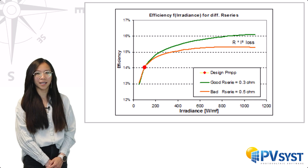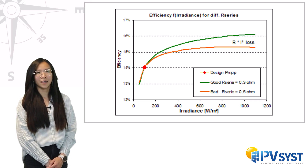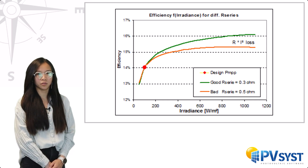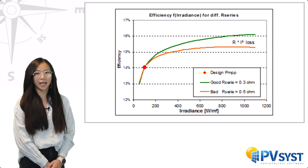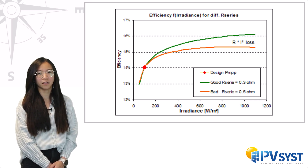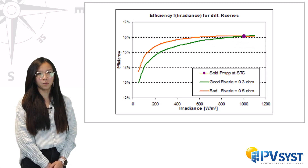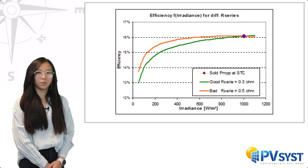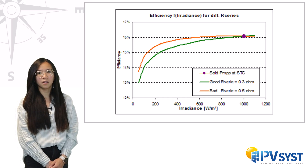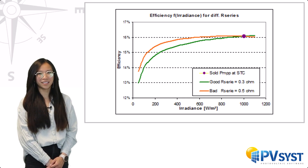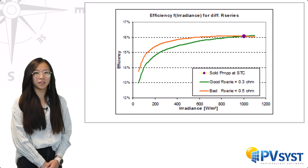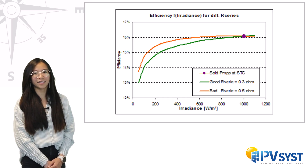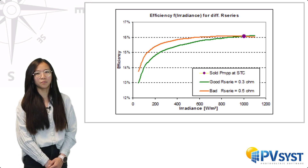Let's define a PV module by its performance at low irradiance. If R series is low, corresponding to a good module, the model gives the green efficiency curve. When R series increases, we have an increasing loss proportional to the square of the current, or equivalently the power, as the voltage is roughly constant. Now when specifying a PV module, we set the reference at STC. If both modules have the same STC performance, the orange curve has to be moved up, meaning we have to build a much better module in all other aspects. In other words, the effort of researchers to limit series resistance increases high-power efficiency but doesn't improve low light performance.